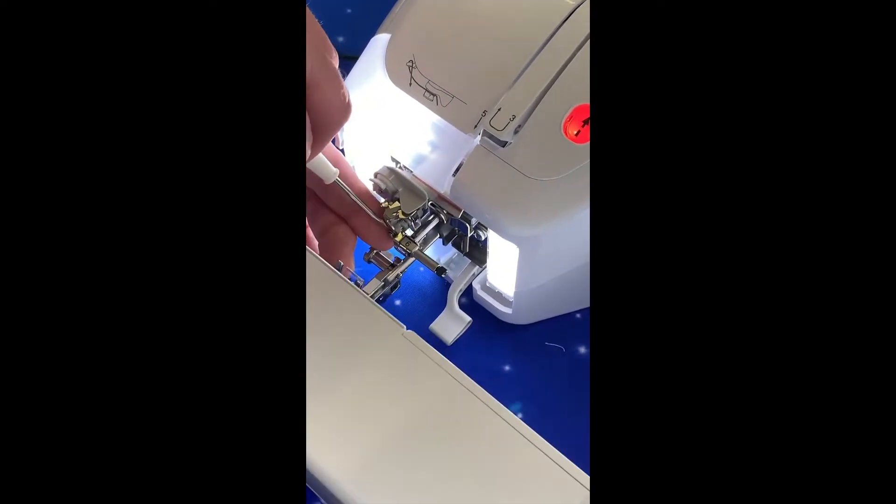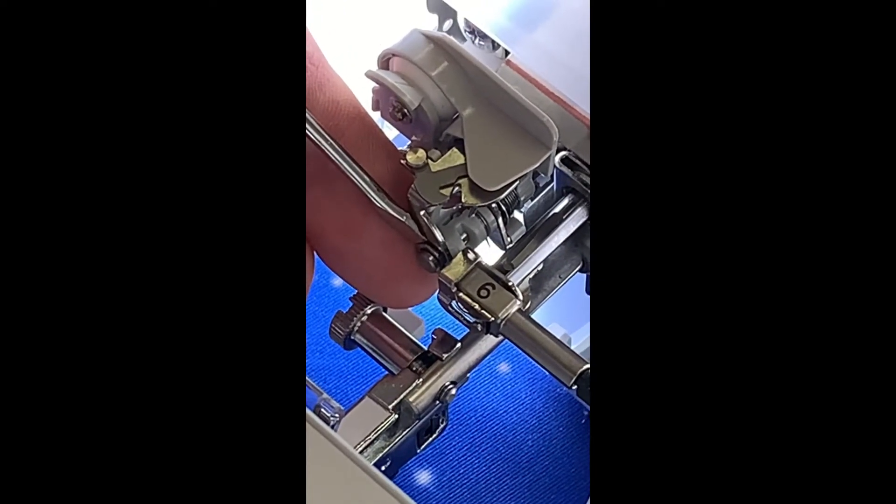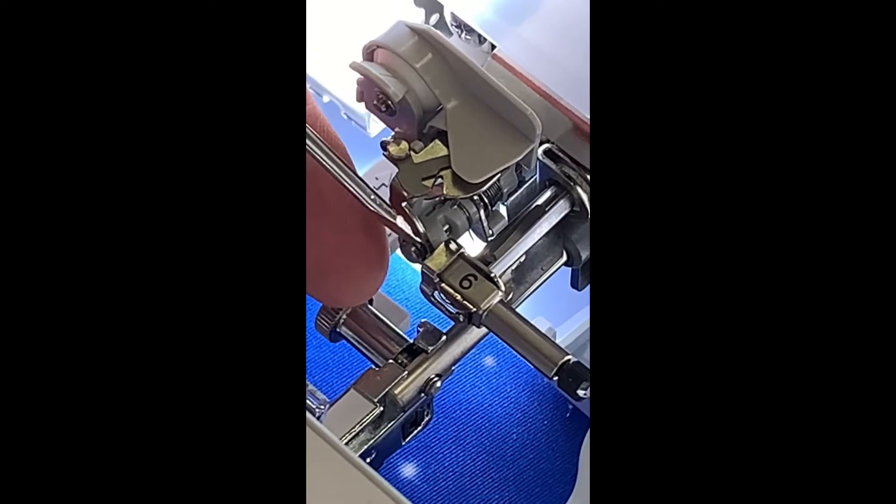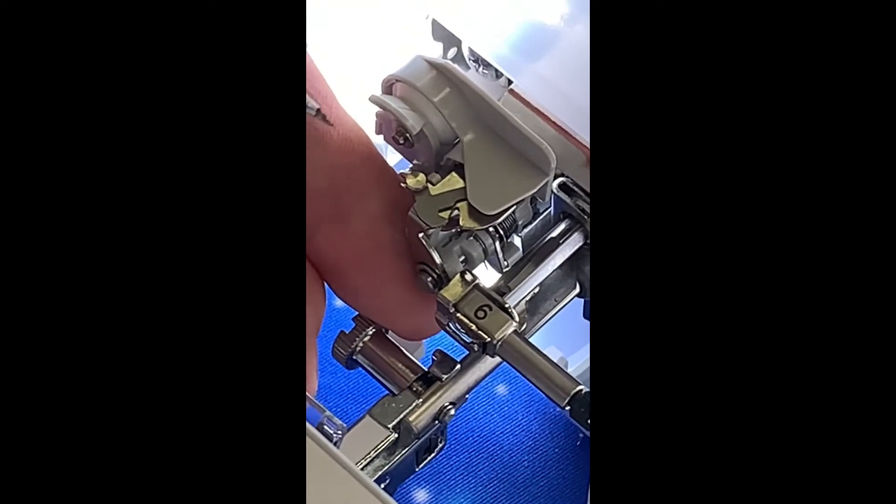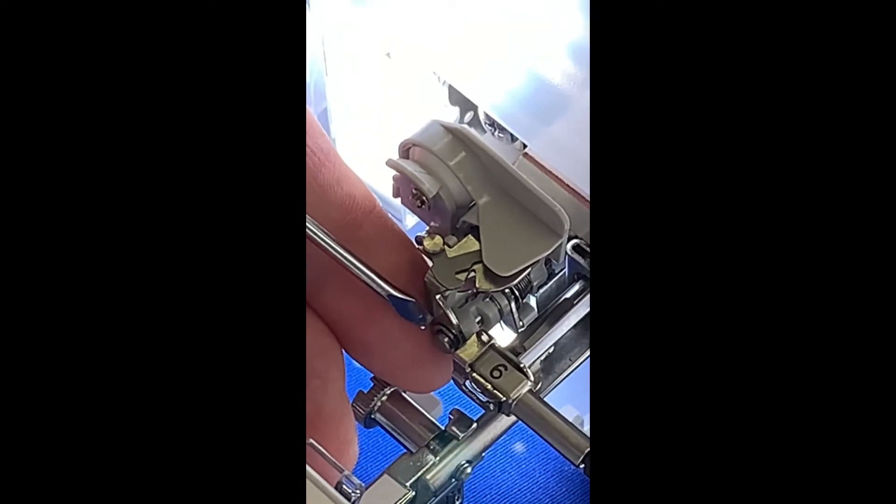The first thing you need to remove is this washer, a circlip washer, which is on the bottom of the needle threader to allow the needle threader to slide down and slide off. The idea would be to put a screwdriver under the edge and click it off.